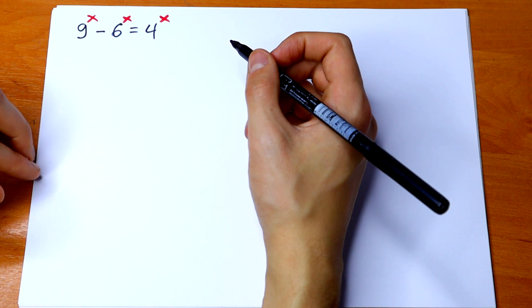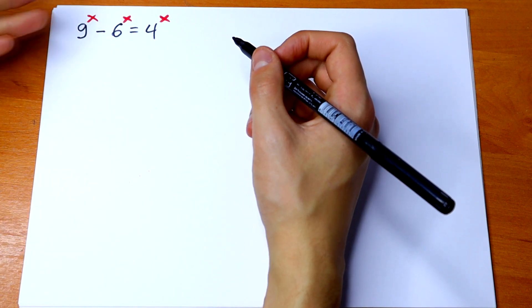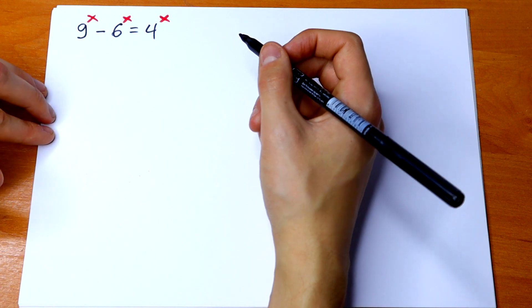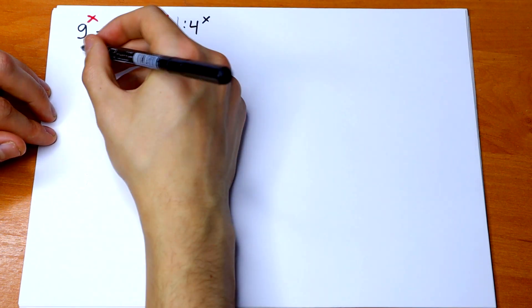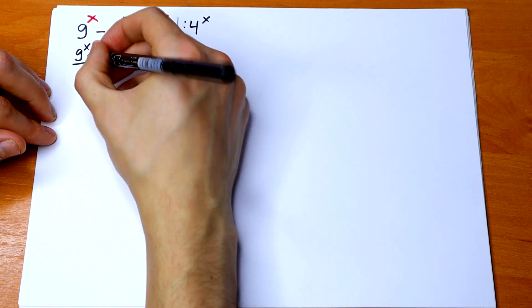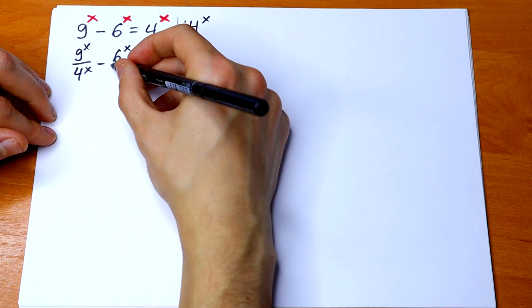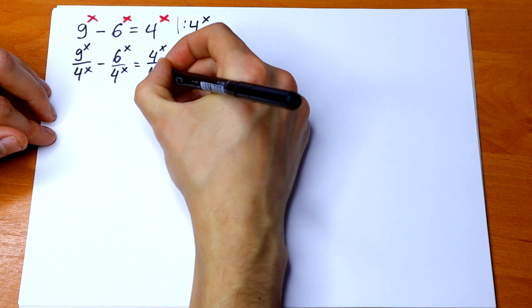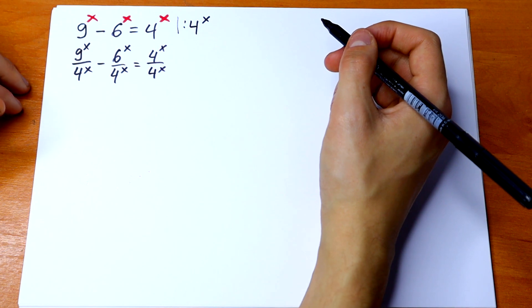The first way to solve this is to divide both sides by one of the bases — 9 to the power x, 6 to the power x, or 4 to the power x. In our case, I'm going to divide both sides by 4 to the power x. So: 9^x over 4^x minus 6^x over 4^x equals 4^x over 4^x — just dividing both sides by 4^x.